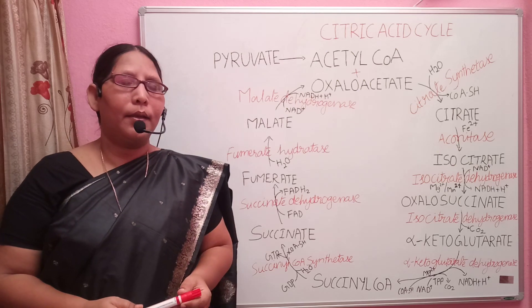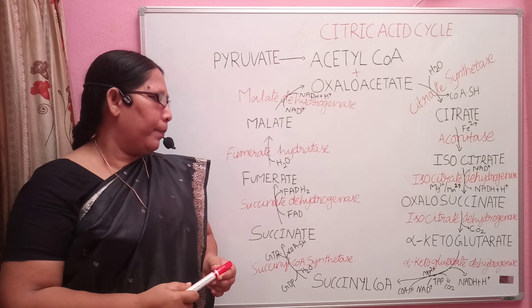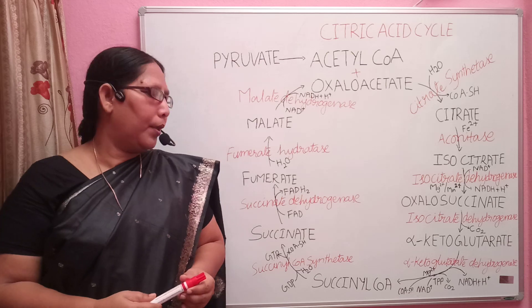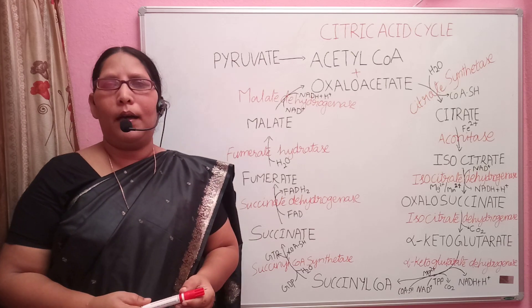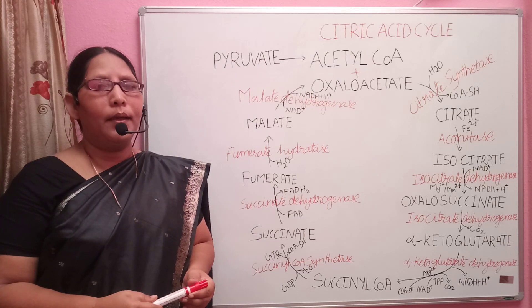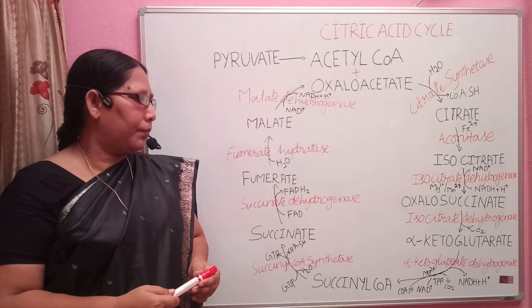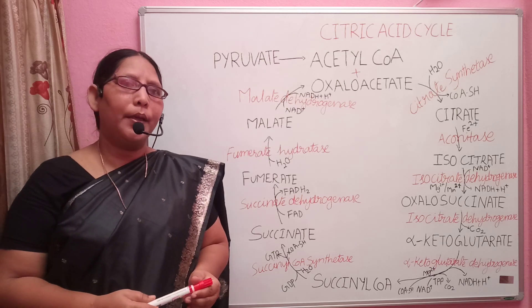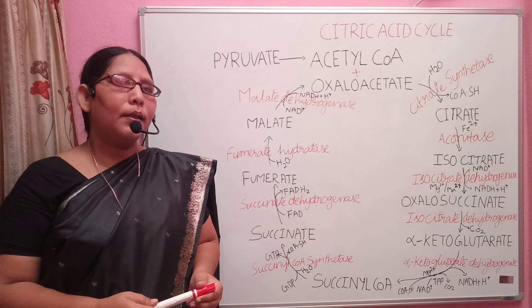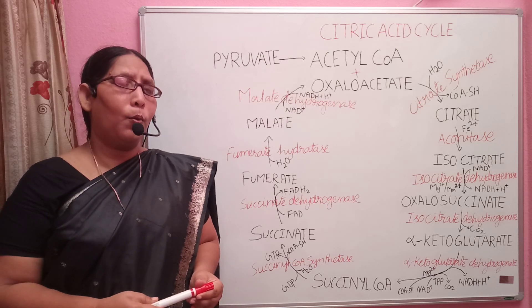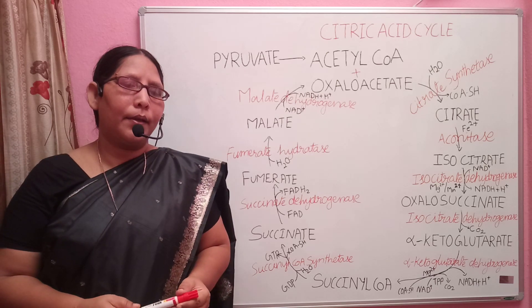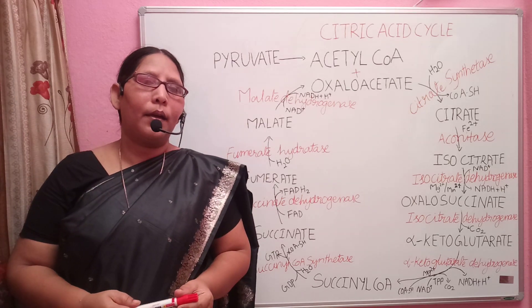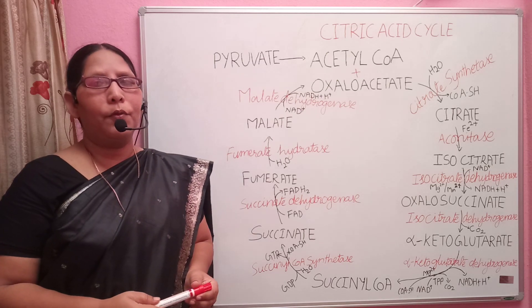Alpha-ketoglutarate forms succinyl coenzyme A in the presence of alpha-ketoglutarate dehydrogenase. This requires magnesium ions, TPP, and lipoic acid, all of which are considered coenzymes. There is a reduction of NAD+ to NADH. Here also, there is a liberation of coenzyme A.